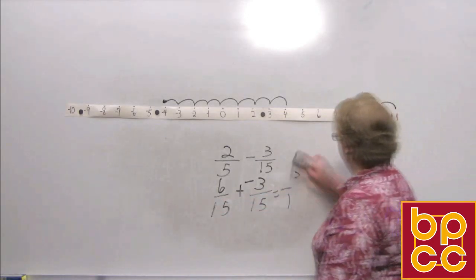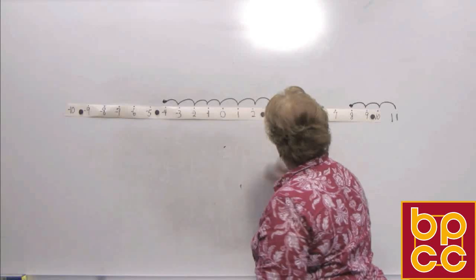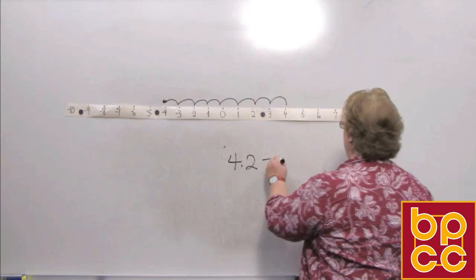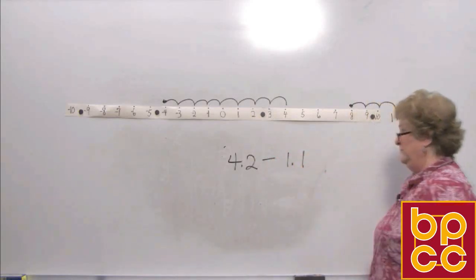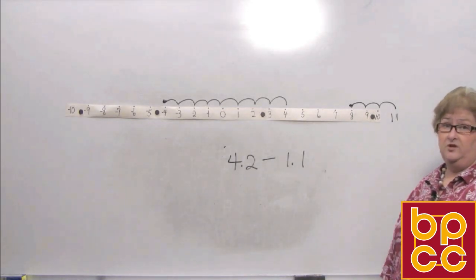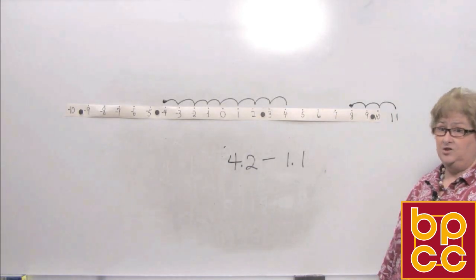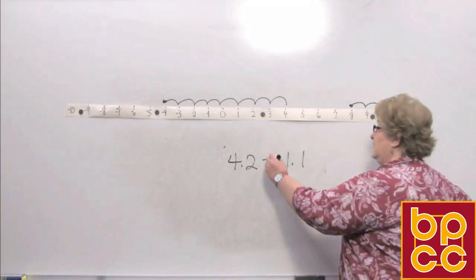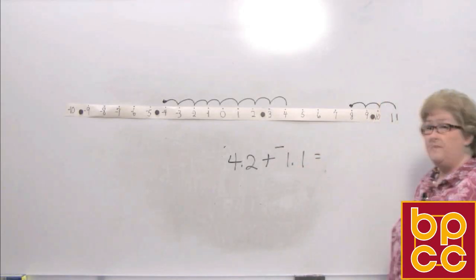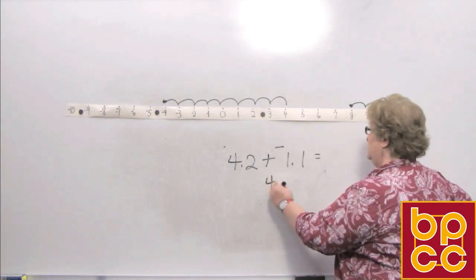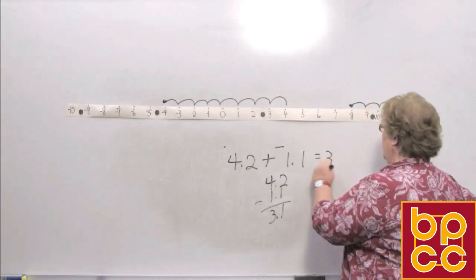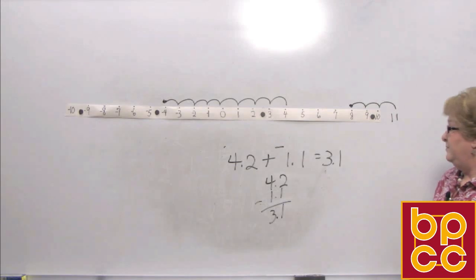Let's try a decimal: 4.2 minus 1.1. We're building up to algebra, so I'm going to do what I normally do — change that subtraction sign to addition, giving 4.2 plus a negative 1.1. I have more positive than negative, so I take the difference — remember the decimal points line up — and I get a positive 3.1.